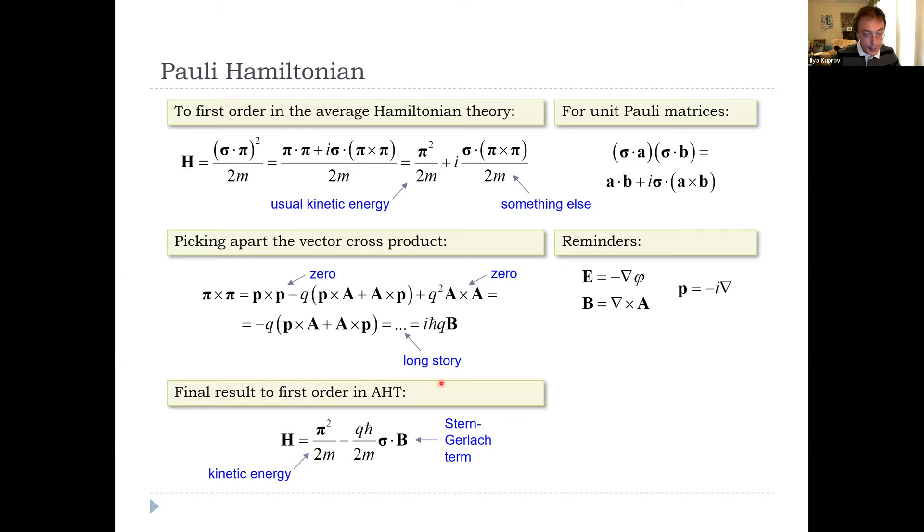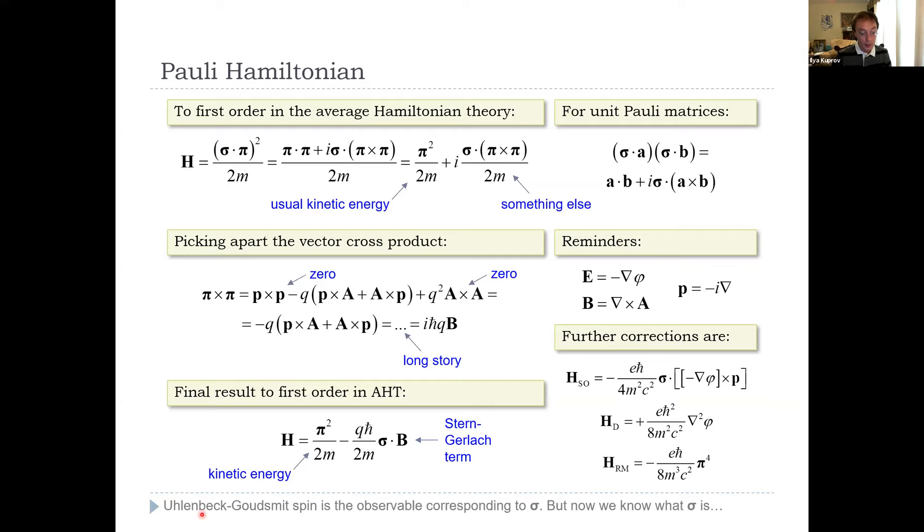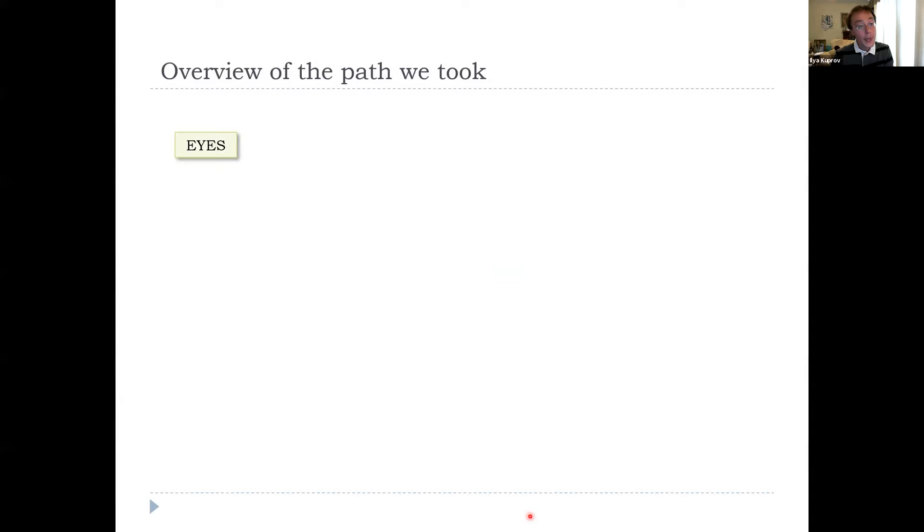If we now substitute everything in, we actually have now the usual kinetic energy and the term that looks like the Stern-Gerlach term that was actually necessary for there to be a spin. And so actually, well, there are further corrections in here. You can go to second order in a slightly different perturbation theory. Then you get the spin-orbit coupling. Once you make this a central potential, this becomes L. So you have S dot L. That's a Darwin term. It's to do with the zitterbewegung—electron effectively has a finite size. That's the relativistic mass term. Electron effectively gets heavier as it gets faster. So actually, we now arrived at the fact that Uhlenbeck-Goudsmit spin is the observable corresponding to sigma. But unlike Uhlenbeck and Goudsmit, we now know exactly where sigma is coming from.